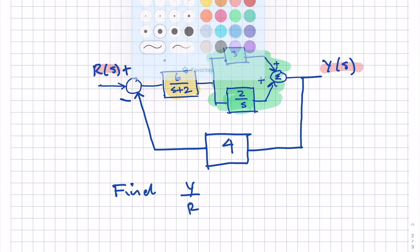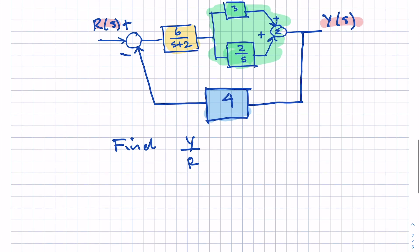And then finally, we have a feedback path that would play the role of H in our previous example. So let's identify some things. We could say G1 is 6 over S plus 2. And then the overall transfer function G2, the part in green, we could say that is 3, and we check the sign on the summer. It's plus for both of them. So plus 2 over S.